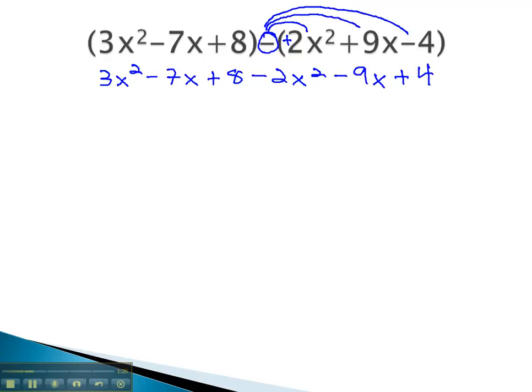And then that will give us an expression we can simplify by combining like terms. Start with the 3x squared. It is like the negative 2x squared, giving us 1x squared. We don't need the 1, we always assume it's there.